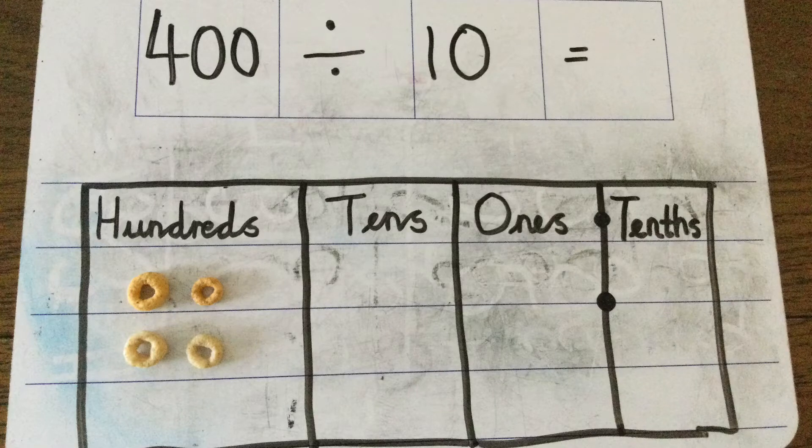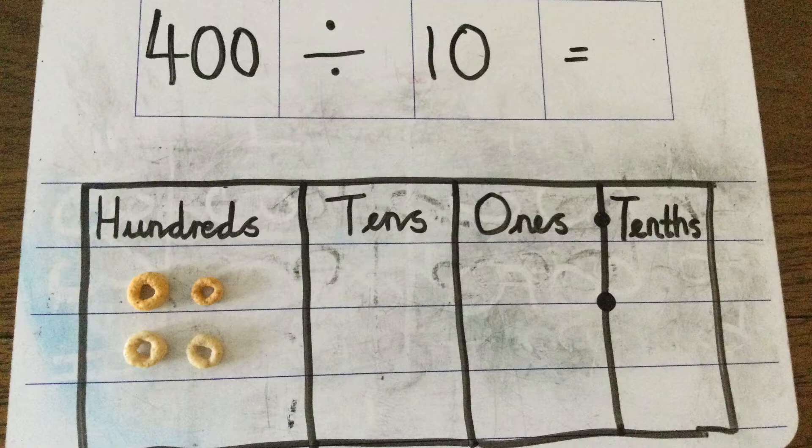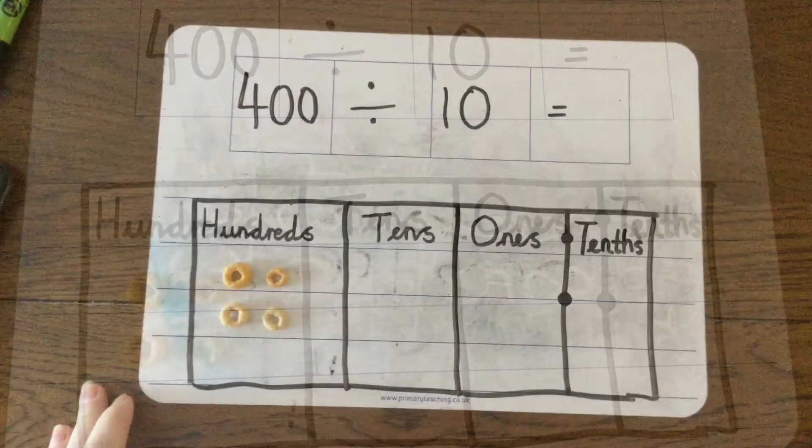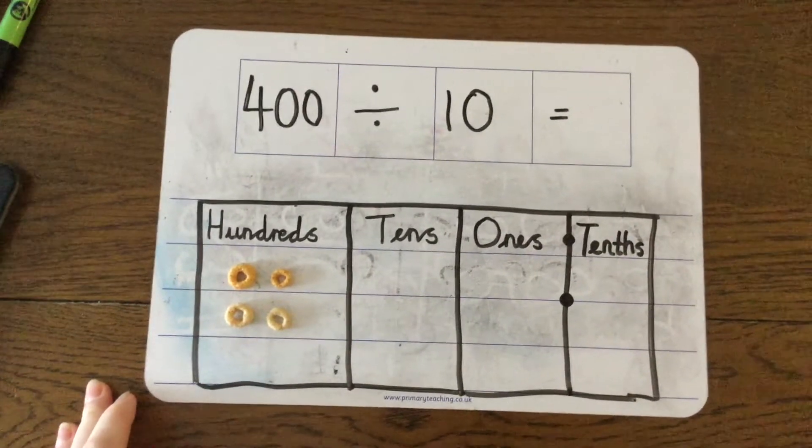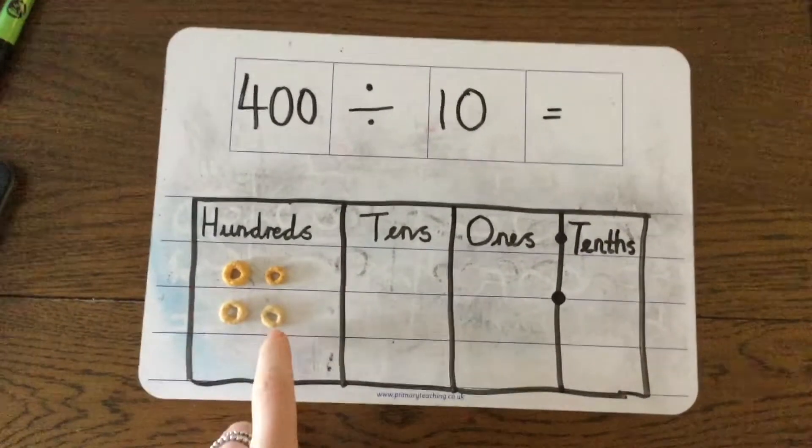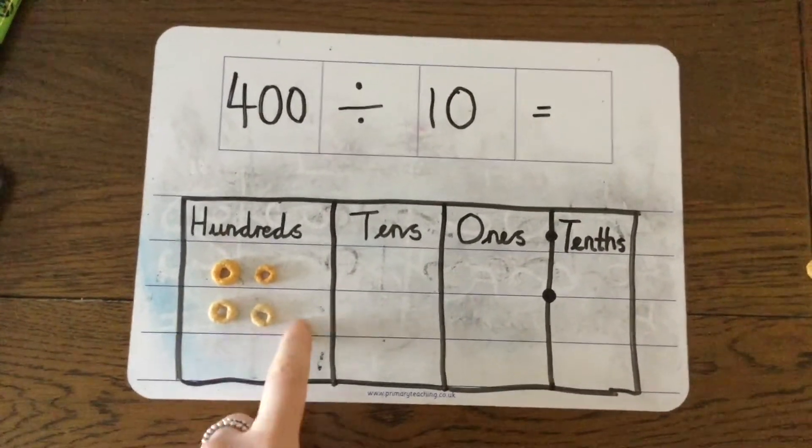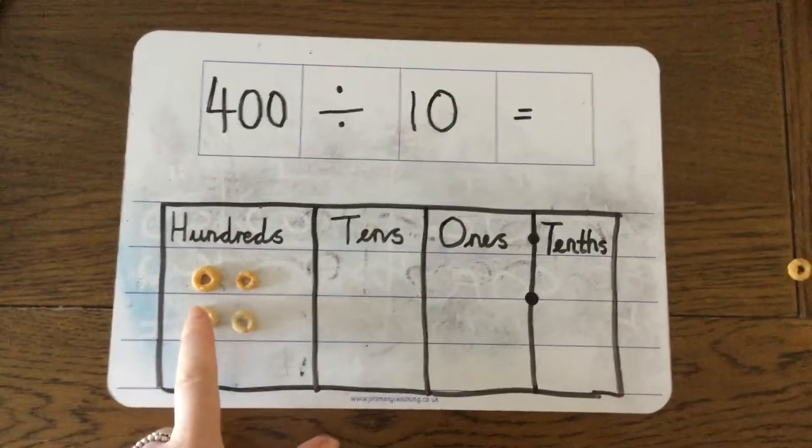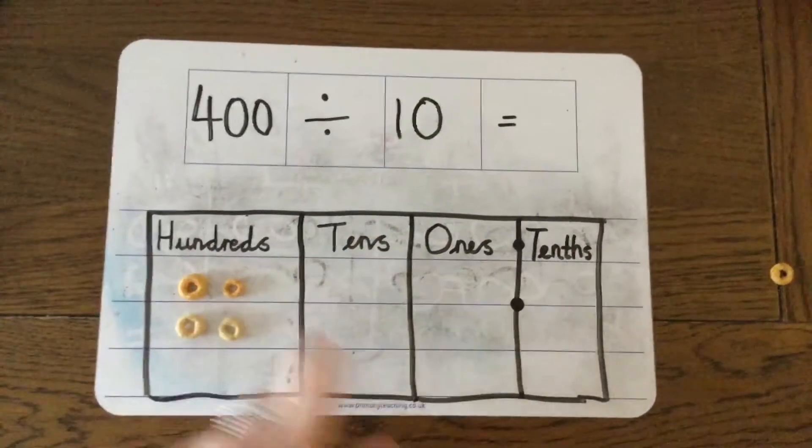So the first calculation we're going to start with today is 400 divided by 10. When we do 400 divided by 10, the place value of our digits here is going to change. So here I have 100, 200, 300, 400.